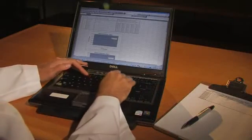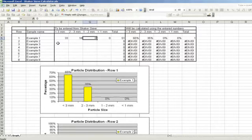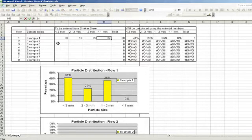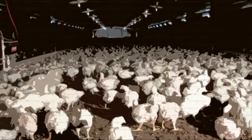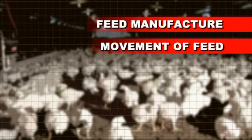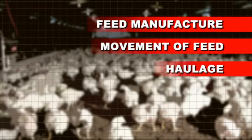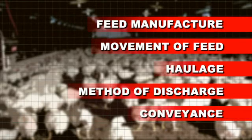If the results of the sieve analysis are outside the profiles in the tables provided, then discussion should be held with the farm and feed mill to identify the factors contributing to poor feed physical quality or degradation, and to provide solutions. There are a number of possible contributing factors to consider: feed manufacture at the mill; movement of feed from the end of the production line to storage bins and onto transport vehicles; haulage in terms of distance and vehicle design and suitability; method of discharging feed from the vehicle to on-farm storage; and conveyance from on-farm feed storage bins to feeder pans, which can often result in degradation of feed texture.